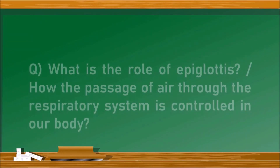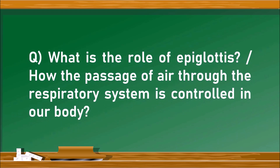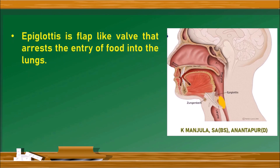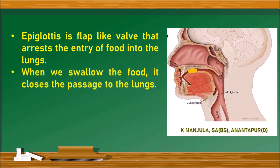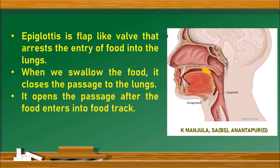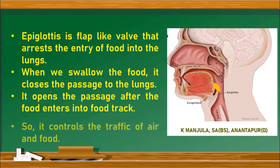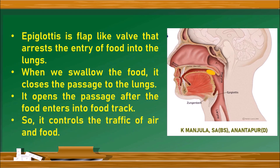Next question: what is the role of the epiglottis, or how is the passage of air through the respiratory system controlled? The epiglottis is a flap-like wall that arrests the entry of food into the lungs. Observe the GIF — when we swallow food, it closes the passage to the lungs and opens it after the food enters the food tract. So it controls the traffic of air and food.